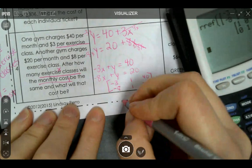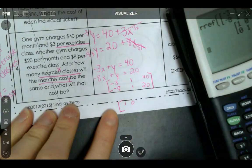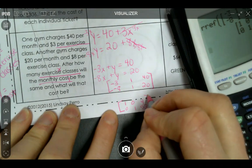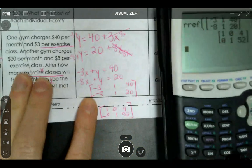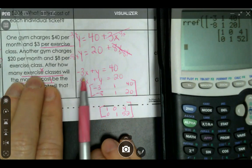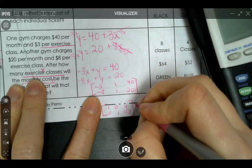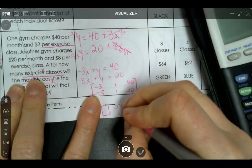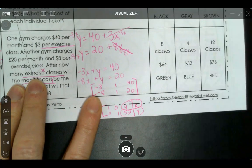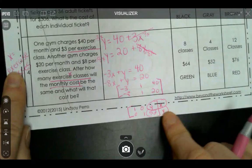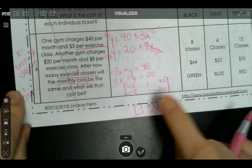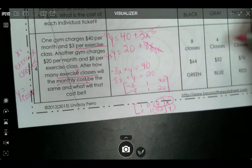So I'm going to write my output matrix: 1, 0, 4, 0, 1, 52. Remember it should have those zeros as diagonals, and because the order is x, y, x, y, then we do the same order x, y. So x is 4, y is 52. Remember x is exercise classes, y is cost. So 4 exercise classes, $52, that is when they are the exact same.